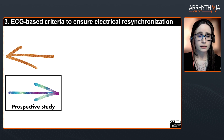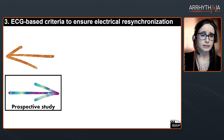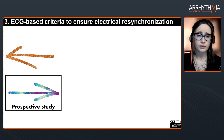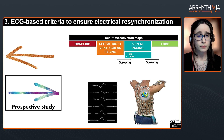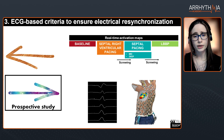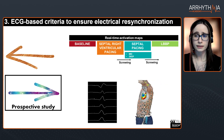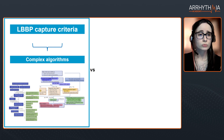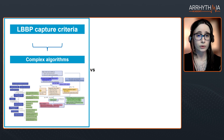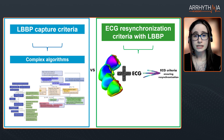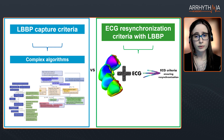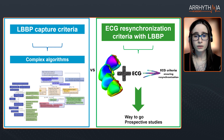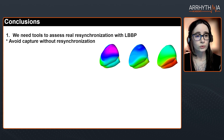As a summary, we have published this retrospective work on resynchronization criteria and are now doing prospective work to validate it — screwing into the septum and analyzing all ECGs and ECGI maps. We want to move from complex left bundle branch capture criteria to ECG-based criteria using only synchronization information. We believe this is the way forward and that prospective studies are needed. I would like to conclude with three main ideas.